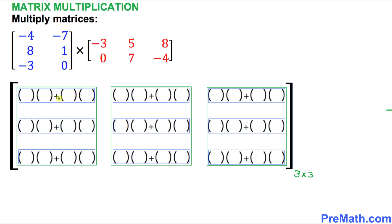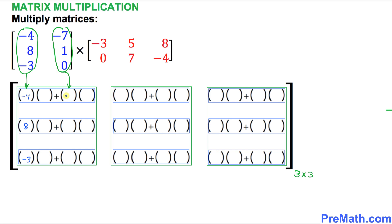Now I'm going to show you how we fill out these empty slots. Starting with the blue matrix on the left hand side, the first column is going to go into the first slot, and the next column is going to go into the second slot. Filling those in, the first column becomes negative four, eight, negative three, and the second column becomes negative seven, one, zero.